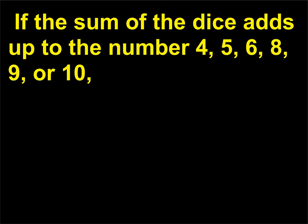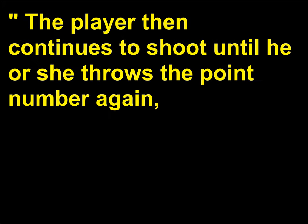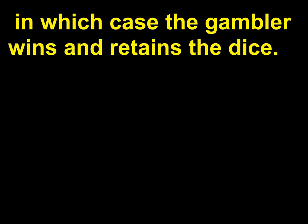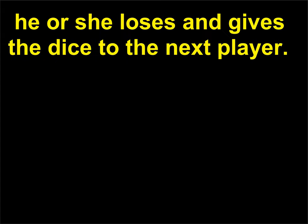If the sum of the dice adds up to 4, 5, 6, 8, 9, or 10, that number becomes the thrower's point. The player then continues to shoot until he or she throws the point number again, in which case the gambler wins and retains the dice. But if the player shoots a sum of 7 before rolling the point value, he or she loses and gives the dice to the next player.